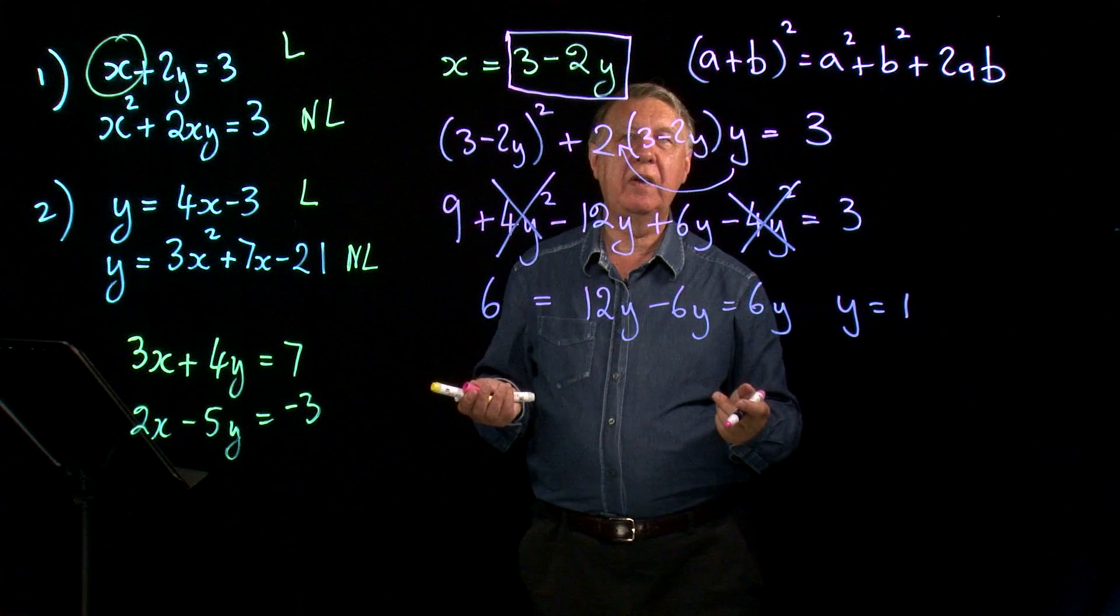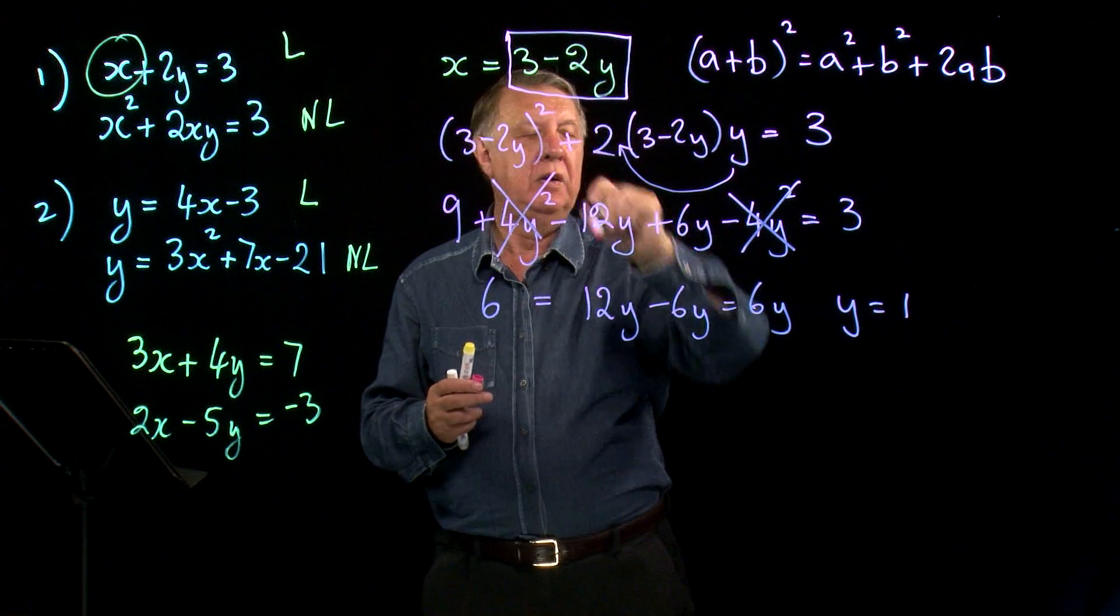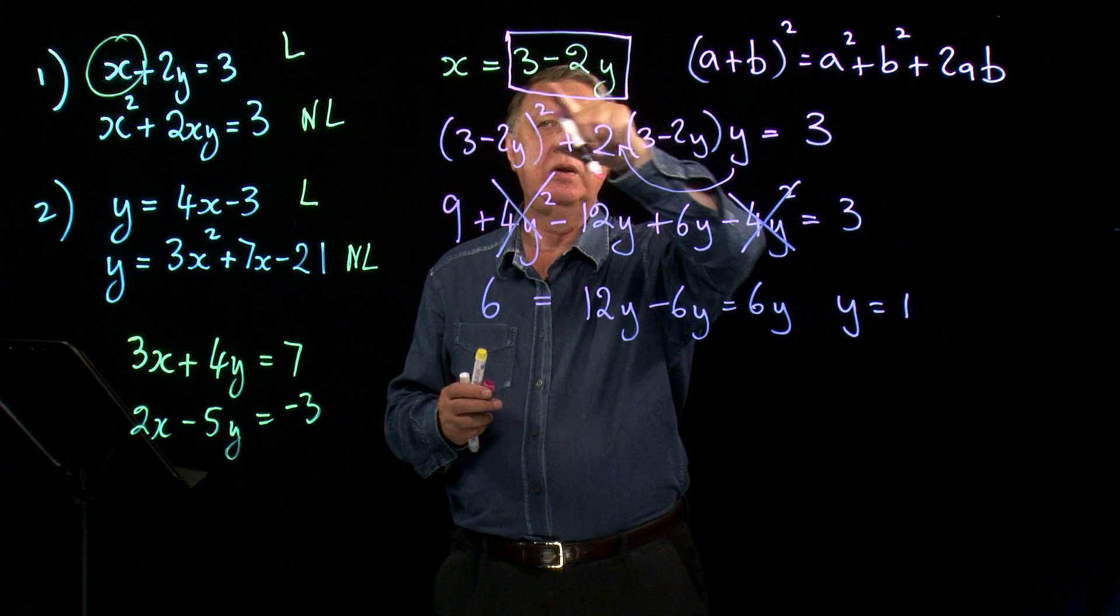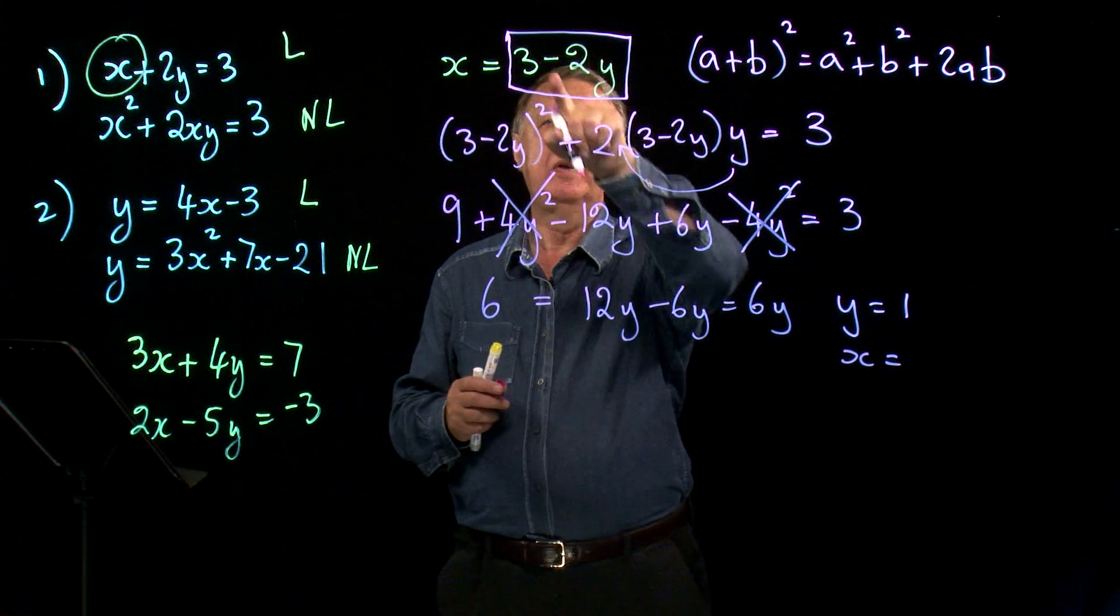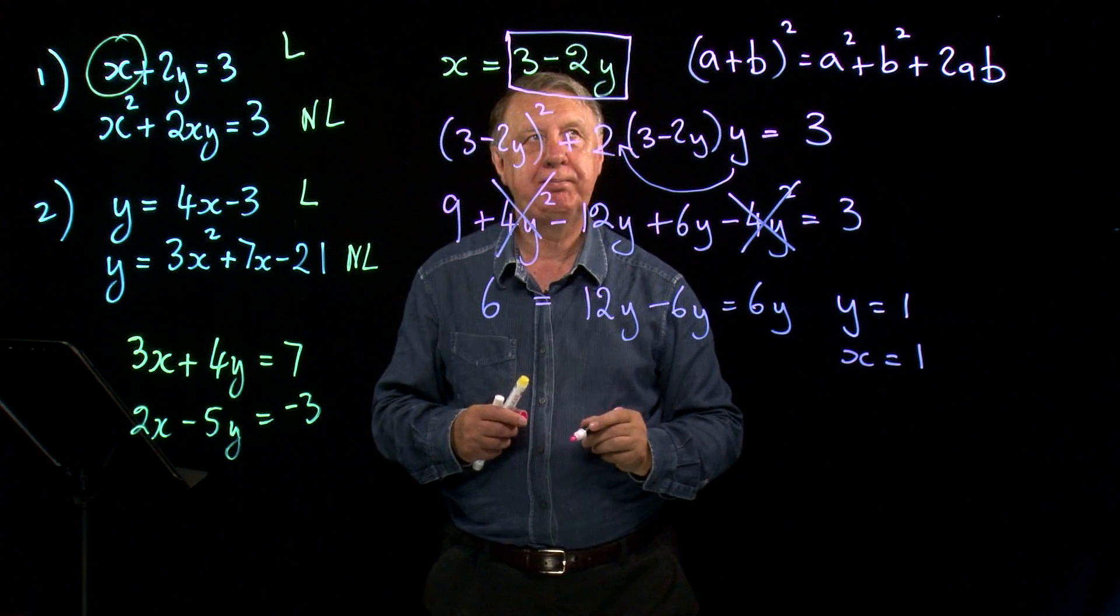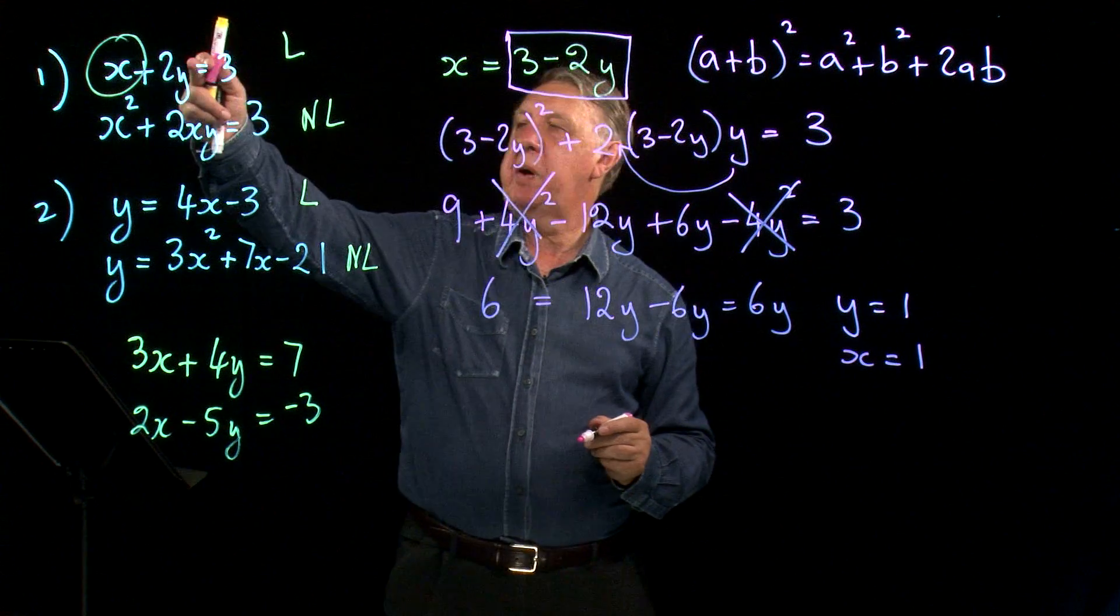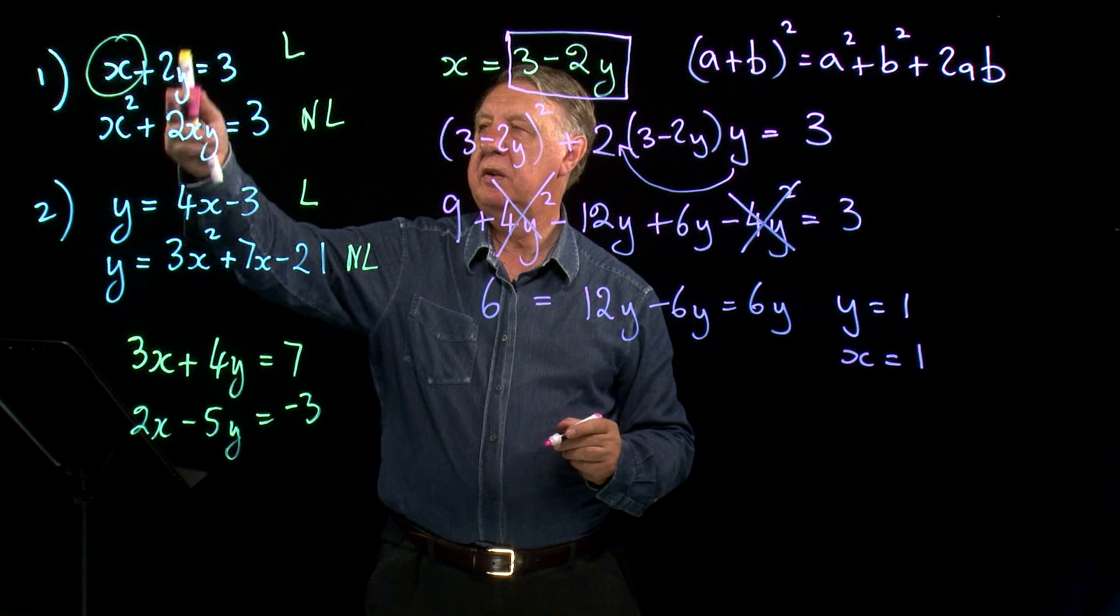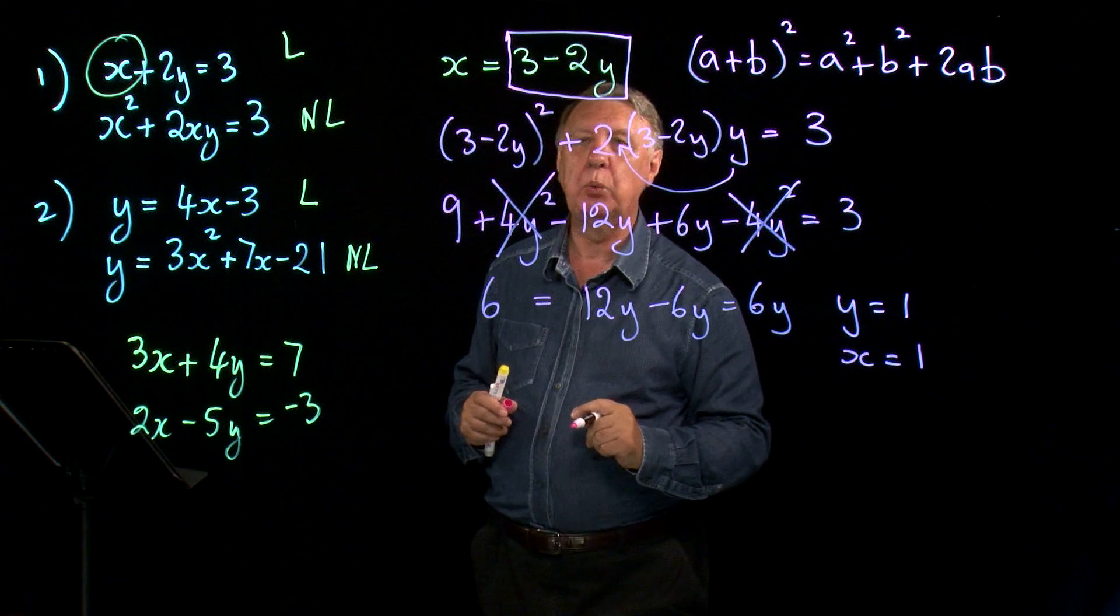Then once I've done that, I go back to my squared box here. I know that y is 1, so therefore x is 3 take away 2 times 1 is 1. So this pair of equations here only has one solution: x equals 1, y equals 1.